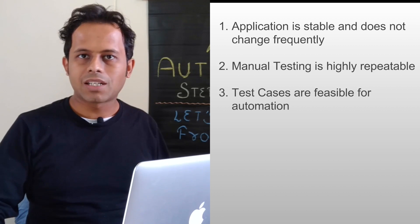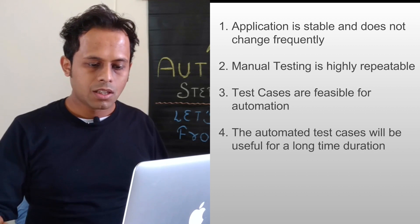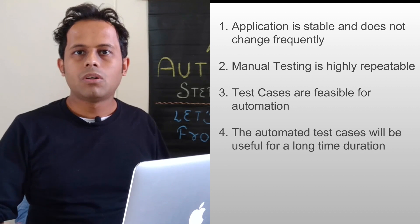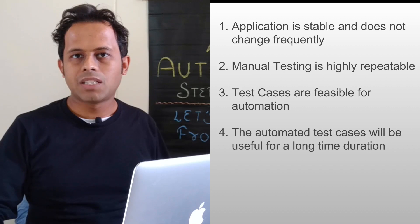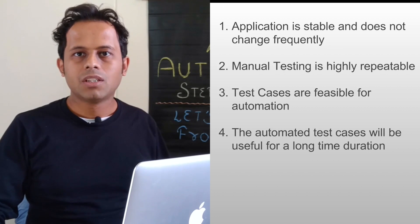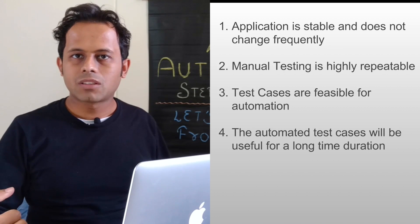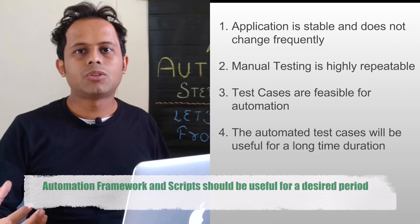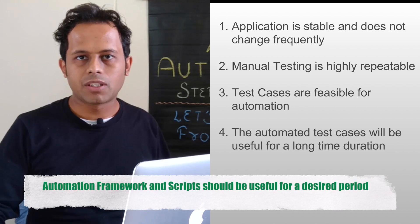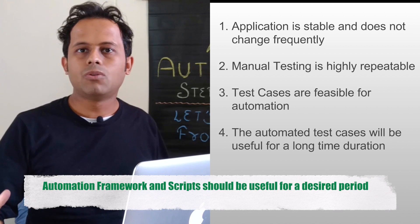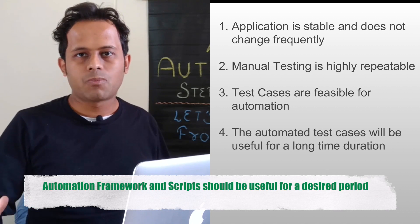The fourth one is we always check that the automation that we do or the scripts automation scripts that we will create, that will be useful for a long duration of time. So it should not be like we invest so much time in creating automation frameworks and creating automation scripts and they are just used for a month and are not usable after that. So of course we always check whether the automation that we are going to create is going to be useful and helpful for a long duration.